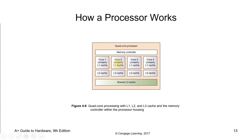The L1 cache is usually split into the instruction cache and the data cache. The instruction cache deals with information about the operation the CPU has to perform, while the data cache holds the data on which the operation is to be performed. The Level 2 (L2) cache is lower than L1 but bigger in size — typically 256 KB to 8 MB. It holds data likely to be accessed by the CPU next, and in most modern CPUs L1 and L2 are present on the CPU cores themselves.